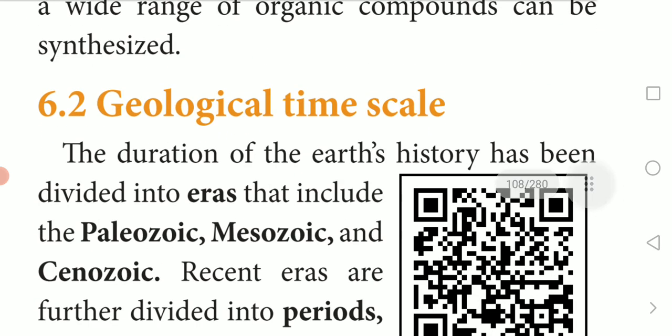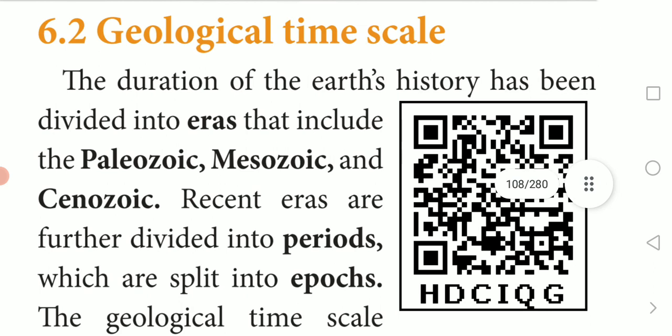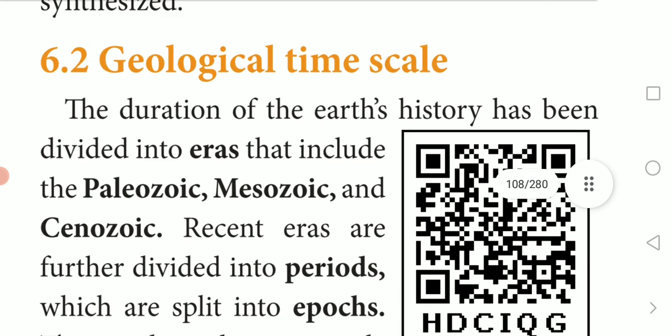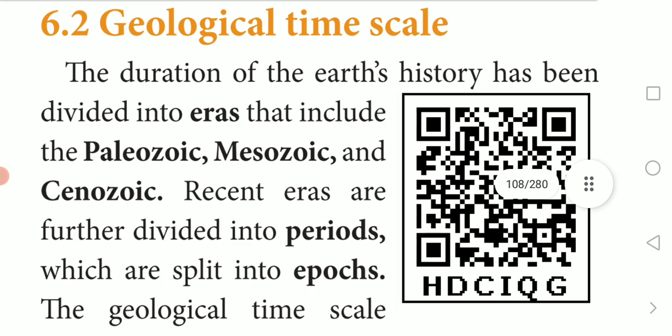The next topic is geological time scale. The durations of the Earth's history have been divided into eras - that includes the Paleozoic, Mesozoic, and Cenozoic. So duration of Earth's history is what we call the geological time scale, and it has been divided into eras - era means that time period or duration.